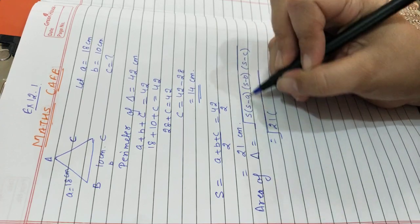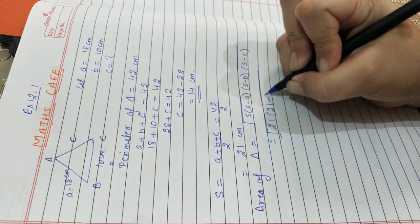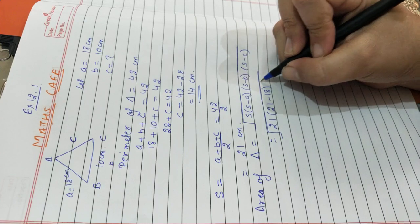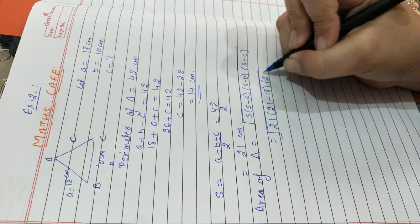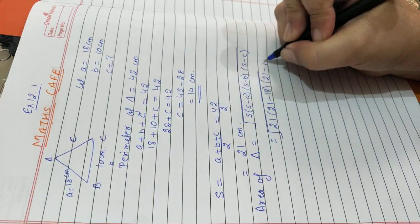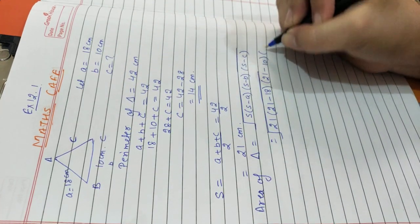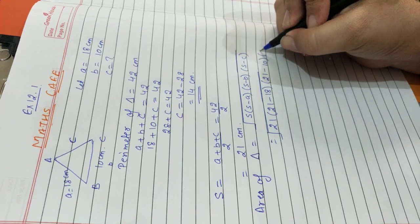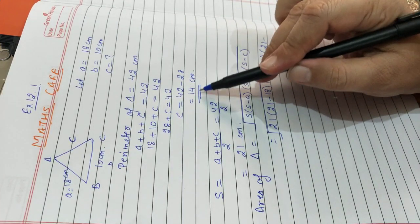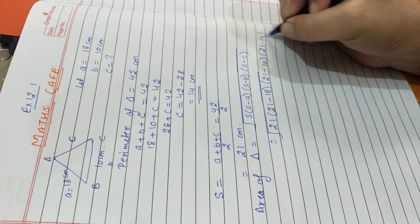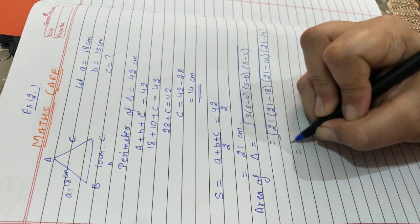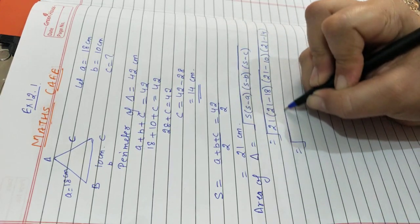S − A = 21 − 18 = 3. S − B = 21 − 10 = 11. S − C = 21 − 14 = 7. Now simplify this expression under the square root.